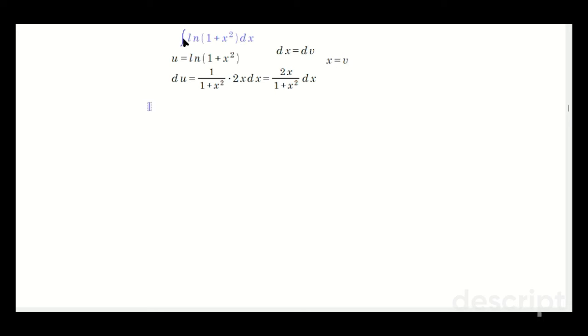So then you set this up, so down below here it's going to be multiply the u and the v, so it's x times ln(1+x²) minus this integral of v du. So v in our case is just x, and du in our case is 2x over 1+x² with the dx.